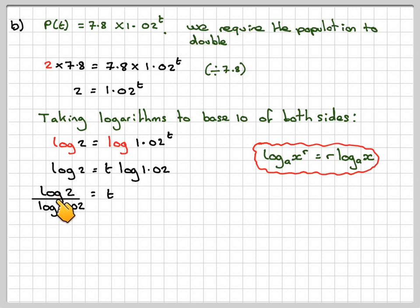Working that out on our calculator, we're going to get that T is 35 years. Therefore, the population would have doubled in 2035.